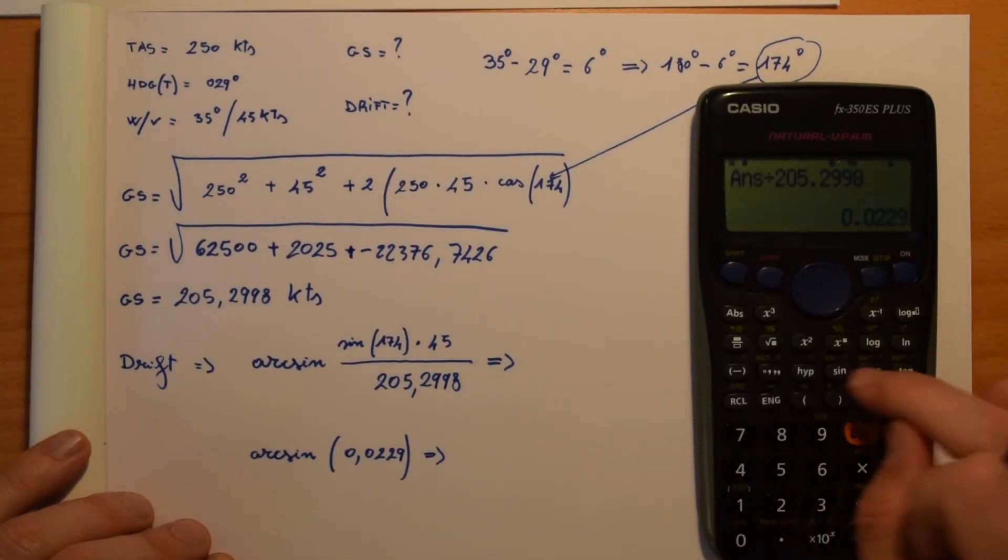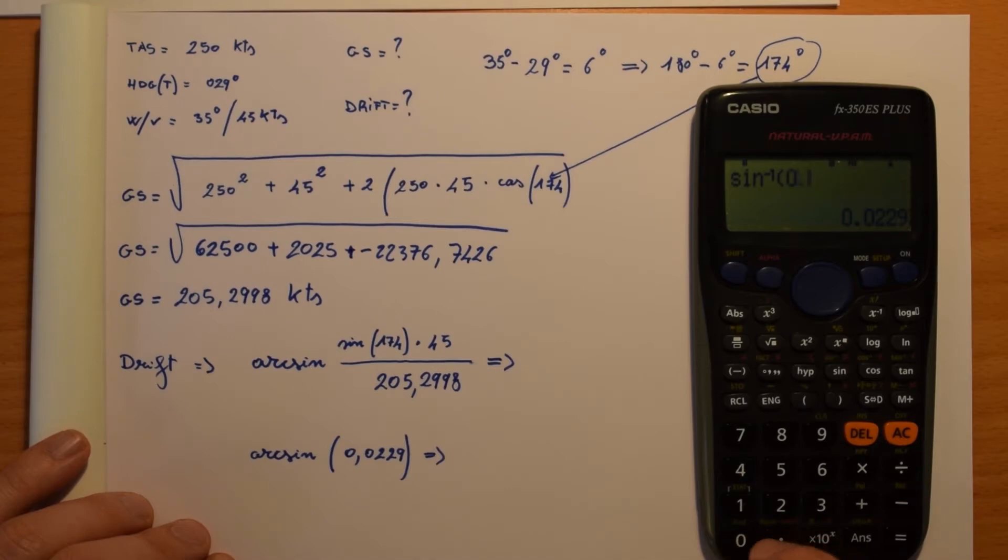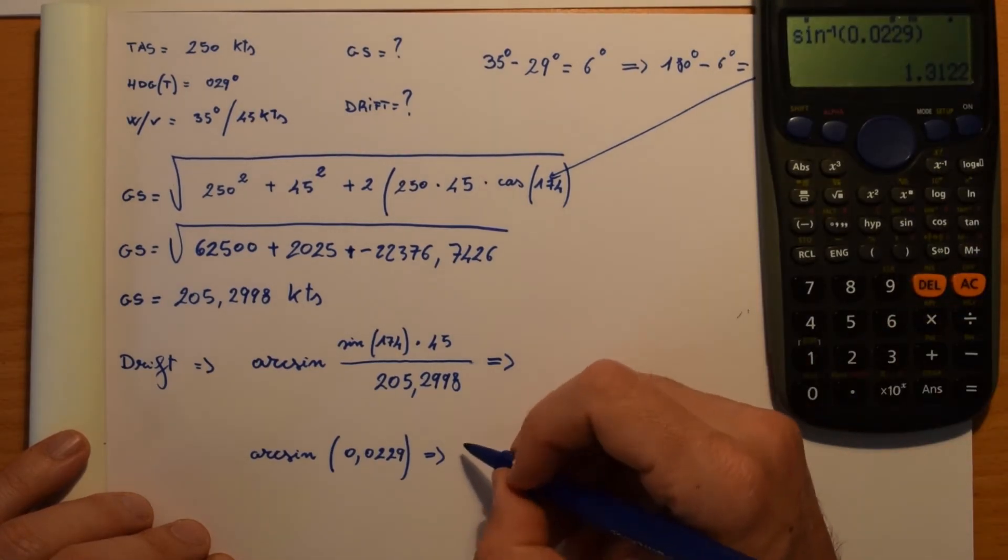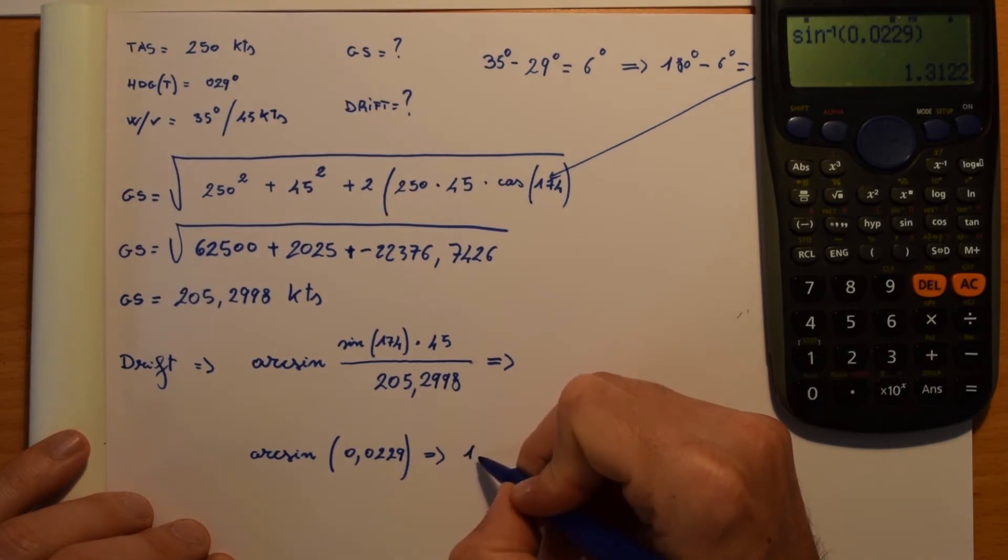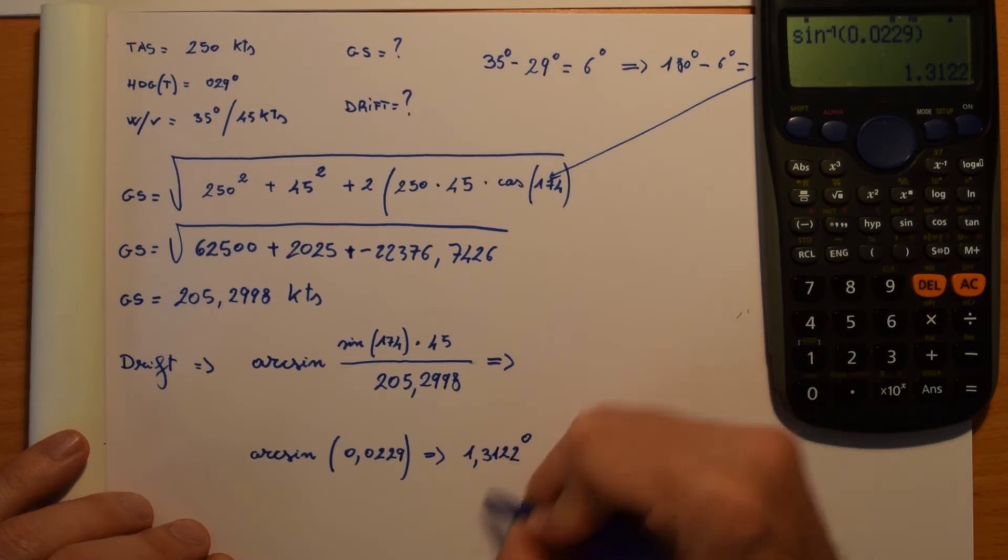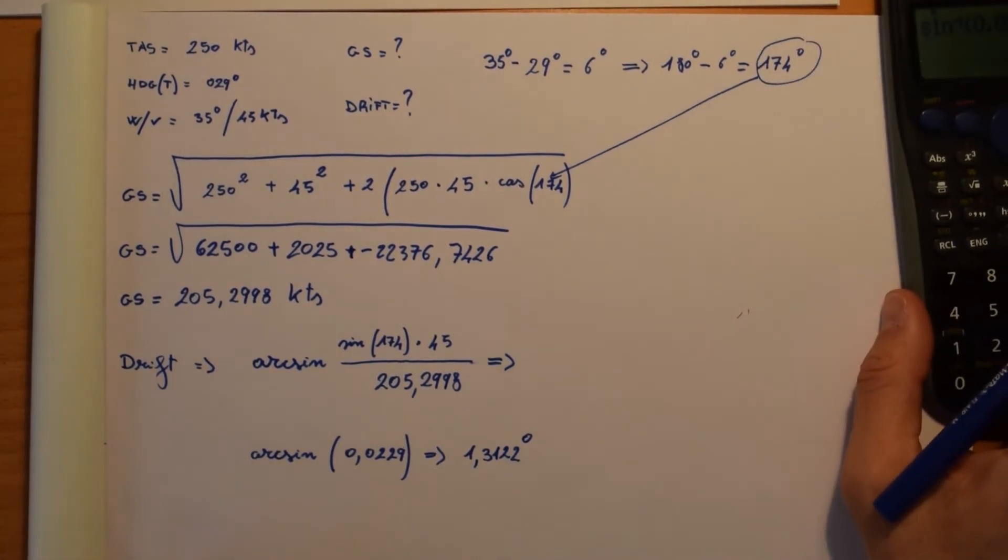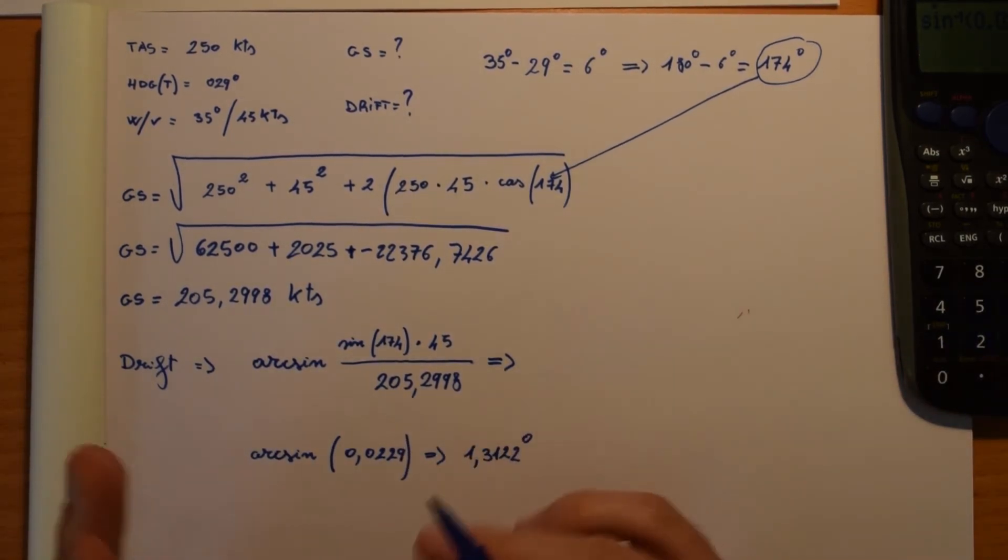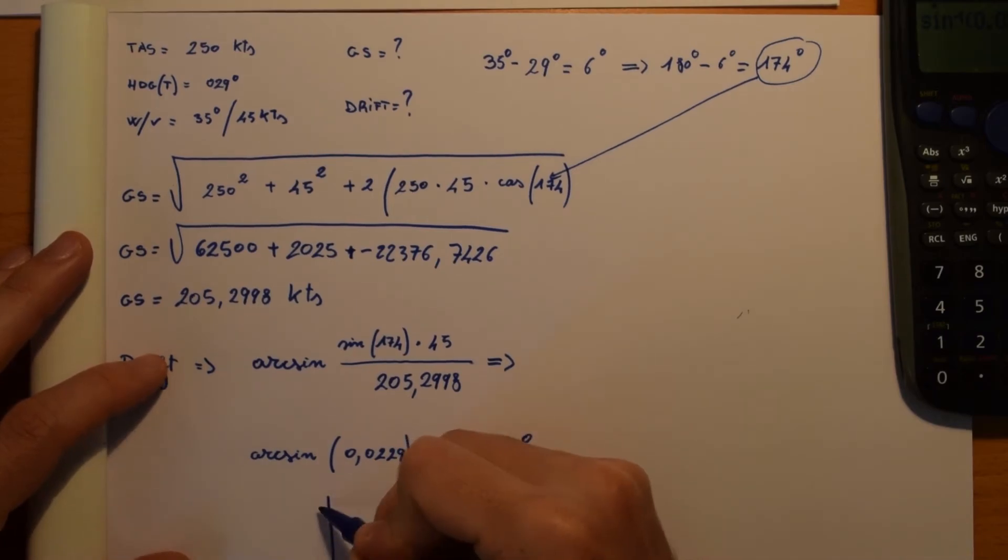0.0229. OK, here we go, we have got the drift. Now let's see if, now we got the result and now we have to see if it's left or right.